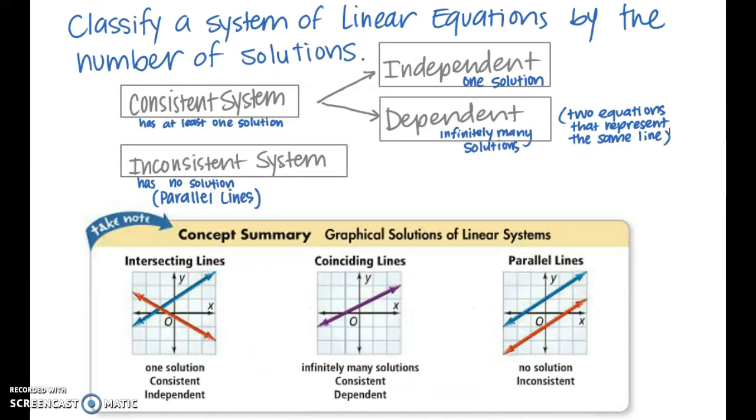We can classify a system of linear equations by the number of solutions. So far, we've just been looking at examples that deal with one solution. And that would be a consistent system. It is a system that has at least one solution. From there, we can break up the consistent systems into independent and dependent. Independent means that there is one solution, so that means we have intersecting lines. And dependent means there are infinitely many solutions, which means we have coinciding lines or two equations that represent the same line. An inconsistent system is a system that has no solution, which means there are parallel lines, as you can see right here.